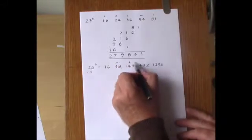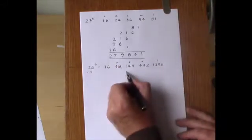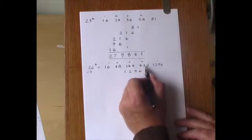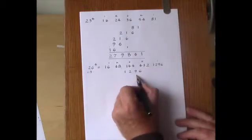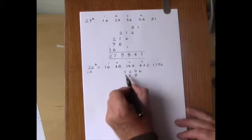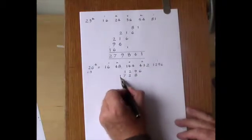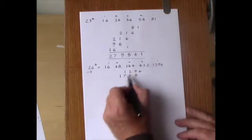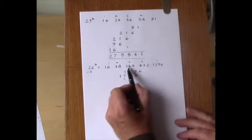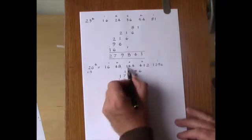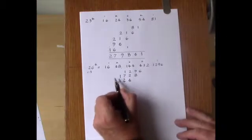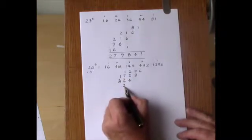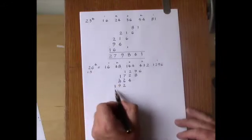Again, we'll write down the binomial coefficients. We need 1 times 1296. We need 4 times 432. So 4 2's are 8. 4 3's are 12. That's 2 with 1 to carry. That makes 17. 6 times 144. So that's 6 4's are 24. 6 4's are 24, add 2 is 26. Once 6 is 6, add 2 is 8. Then we need 4 times 48, which is 192. Finally, 1 times 16.